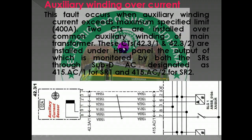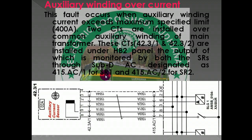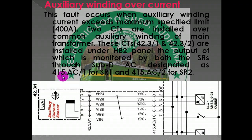These two CTs are in the HB2 panel. There are two CTs — 415.ac and 415.ac by 2, for SR1 and SR2 respectively.